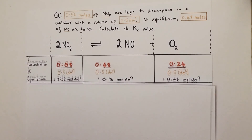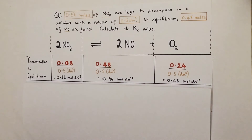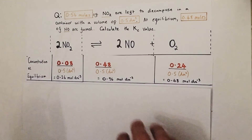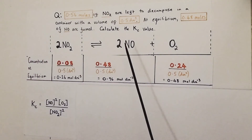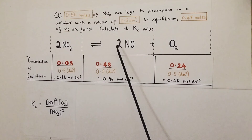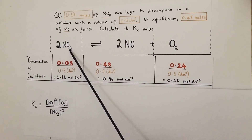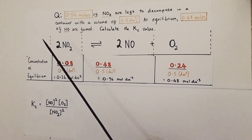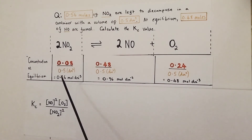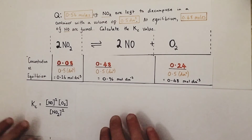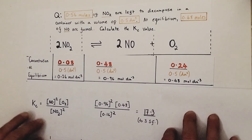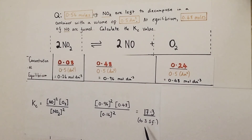Now we write the Kc expression and plug those numbers in. The Kc expression is products over reactants — concentrations raised to the power of their coefficients. That gives us [NO]² times the concentration of O2, divided by [NO2]², because both NO and NO2 have a coefficient of 2 in the balanced equation. Plugging in these concentrations, the value that comes out is 17.3 to three significant figures.